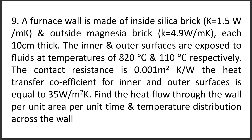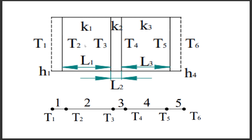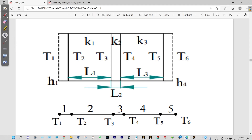For understanding this, let us see the actual drawing. We can see the inner brick and the outer brick, and in between there is contact resistance. On both sides there is convection with two different fluids. The convection heat transfer coefficient is provided, as well as thermal conductivity of material 1 (k1) and material 2 (k3). The contact resistance element uses k2, where contact resistance equals L2 divided by k2 times area.